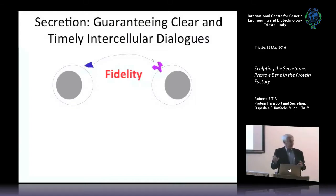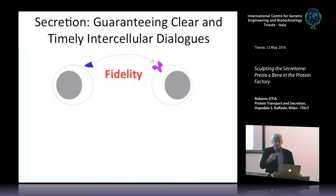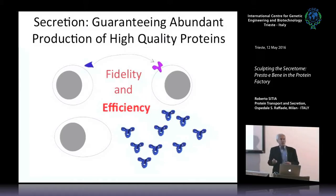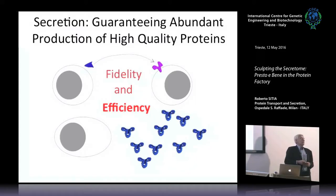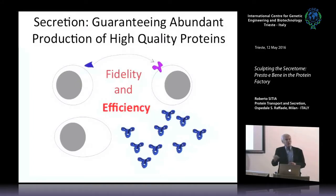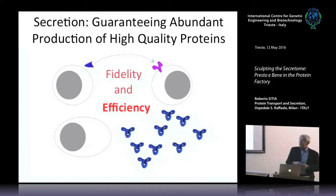We don't want our cells to make errors because an error in a cell can be lethal - you can have tumors. At the same time, cells must be able to produce huge amounts of proteins. Imagine a plasma cell that has to respond to a pathogen: the production of antibodies should be faster than the rate of replication of the virus. You want your antibodies to be produced fast.